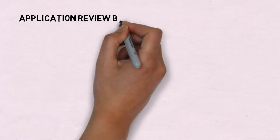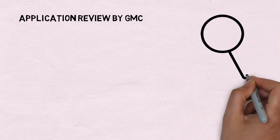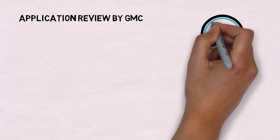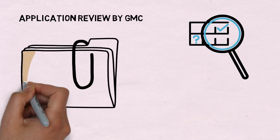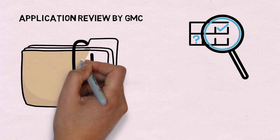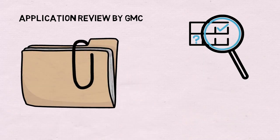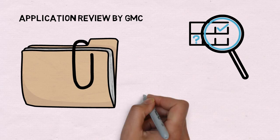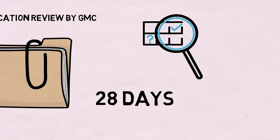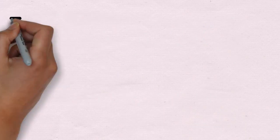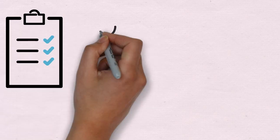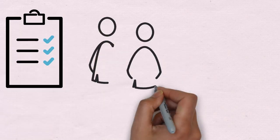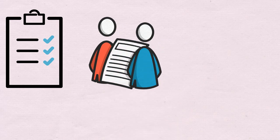Once you have submitted your application, GMC will go through it and in a day or two they will mail you a list of documents which you have to send back via email within a 28-day period. Once all your documents are accepted by the GMC, they will ask you for a face-to-face ID check.